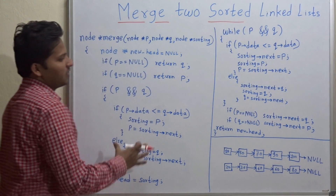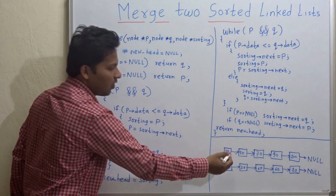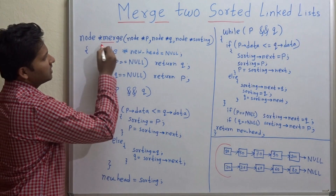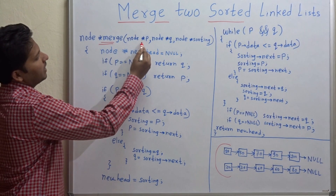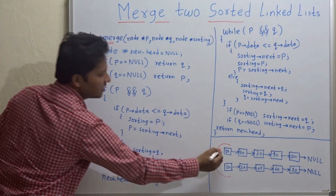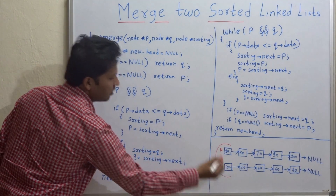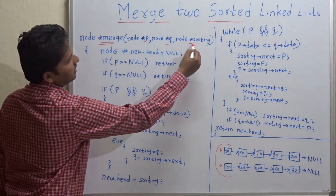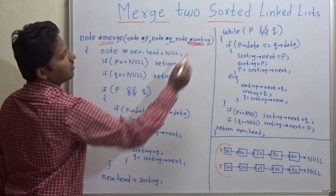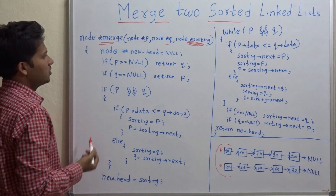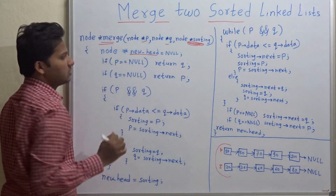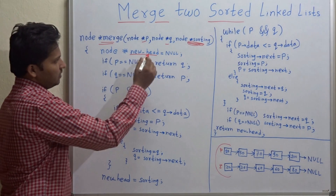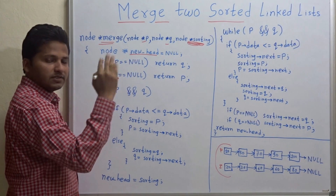This is the code and we are going to execute this code on this example. The name of the function is merge and the parameters passed are the heads of the two linked lists — that is P and Q. And the head of the new linked list, that is the sorting list — this is the tracing node of the new linked list. Inside, we declare: node star new head equal to null. The new head is the head of the merged sorted linked list.